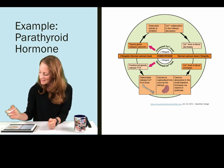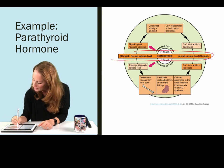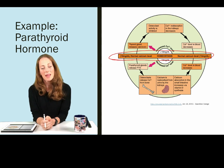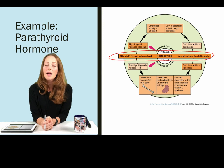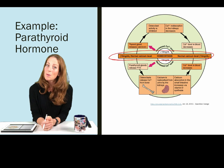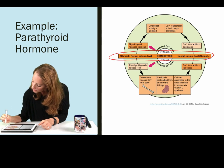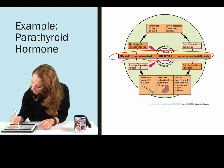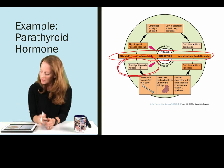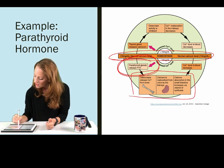In this example, we have the body trying to keep calcium at a normal range. Calcium is very important for many of the biochemical reactions within the cells. It's also a stabilizer for membranes, maintains bone health, and does many other important functions for the body. If the parathyroid glands sense that calcium levels in the blood are too low, then they're going to release parathyroid hormone.